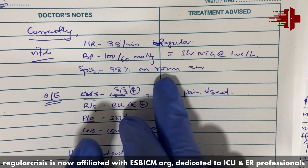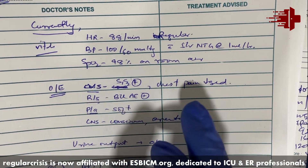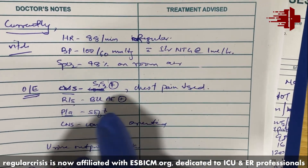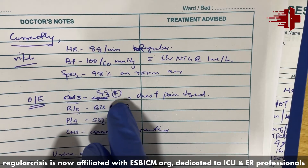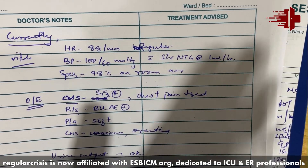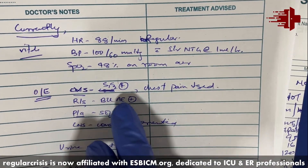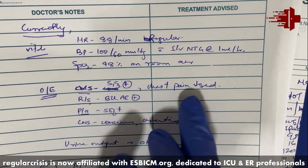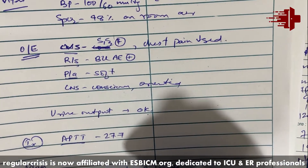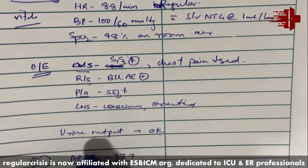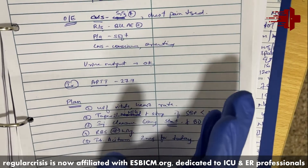Currently, the patient's vitals are stable. The patient is on NTG support and SpO2 is maintained. On examination, the primary systems involved — CVS and respiratory — are reviewed first since the patient presented with chest pain and dyspnea. Both heart sounds are present equally. Although there is a stuck valve, it is not hampering blood flow, so we can manage the patient conservatively. Chest pain has decreased.